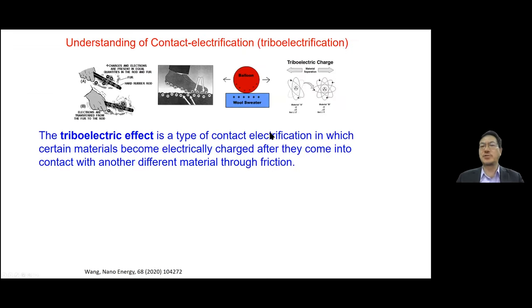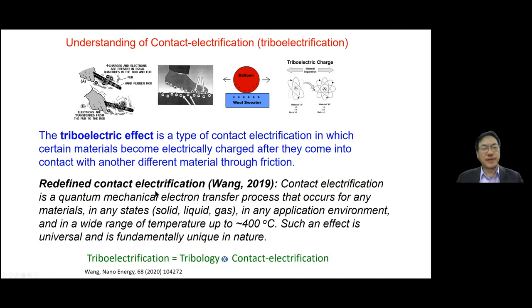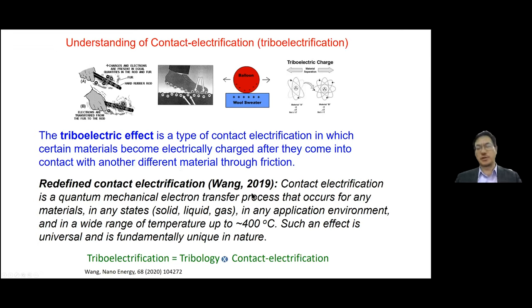The dictionary definition says triboelectricity is a type of contact electrification in which certain materials become electrically charged when they come into contact with a different material. We now revise this: contact electrification is a quantum mechanical electron transfer process that occurs for any materials in any states, in any application environment, even up to 400 degrees Celsius. Therefore, we have redefined triboelectricity.